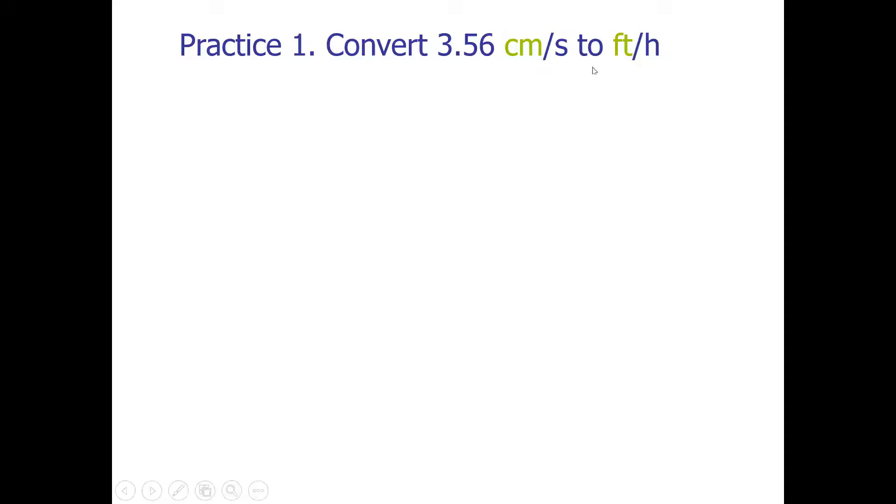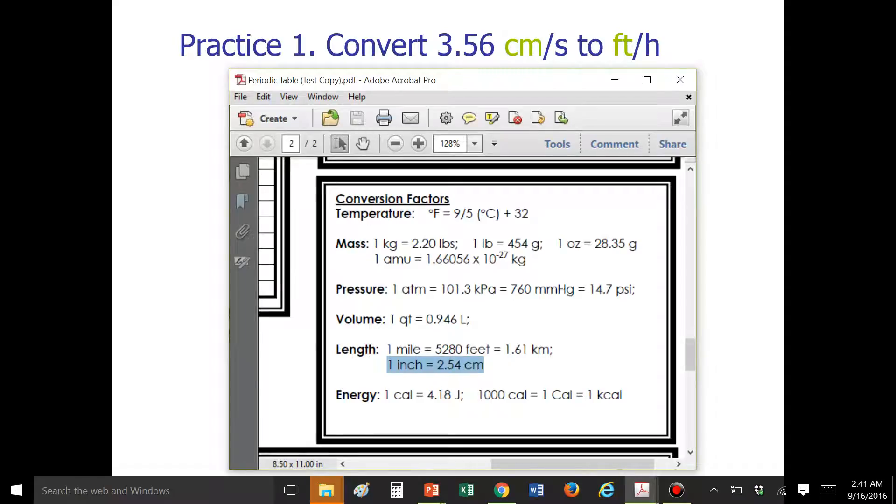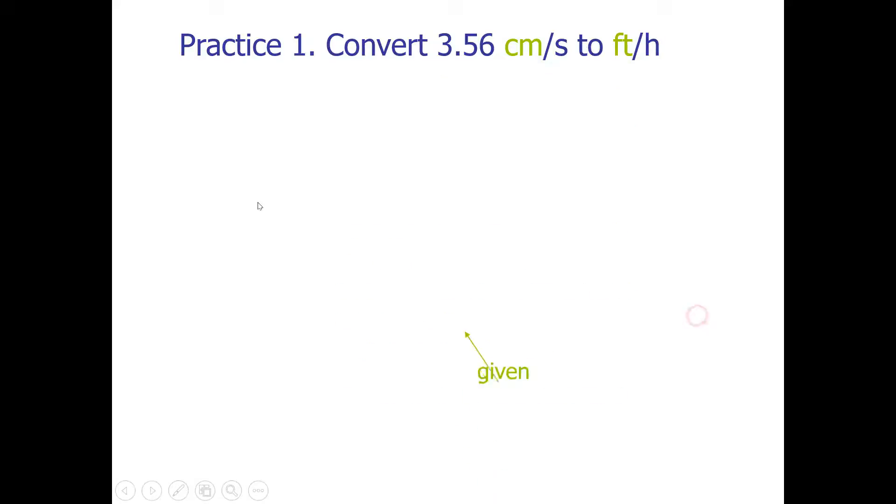So since I recognize this to be a metric unit and this is a USCS unit, I might want to refer to the back of my periodic table to find this conversion. There's a conversion between inches and centimeters and one inch is 2.54 centimeters. So I'm going to list that under my ratios. I also know I need to convert to feet.